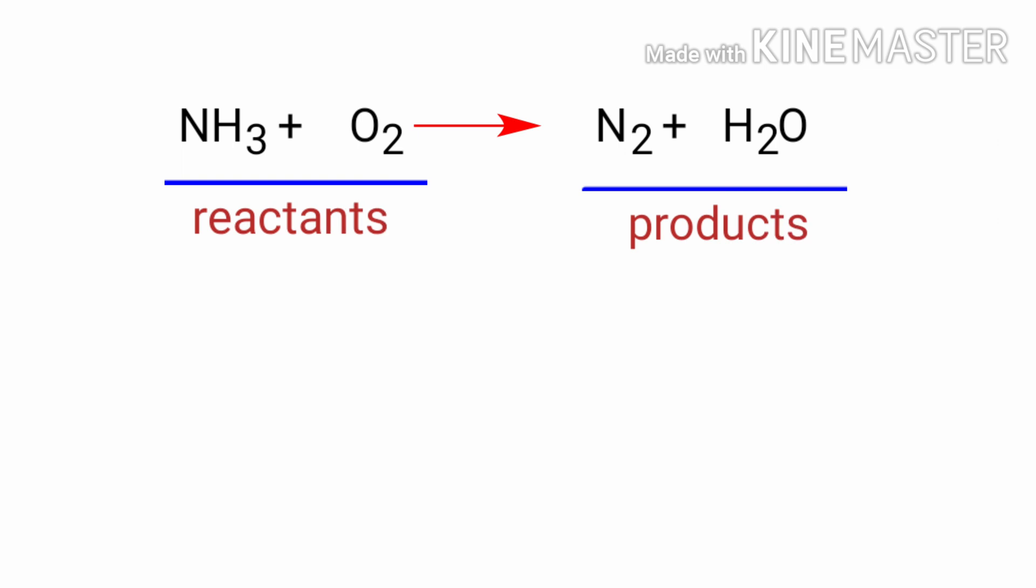In this equation, the reactants are ammonia and oxygen, and the products are nitrogen and water. If you look at this equation, the equation is not balanced.